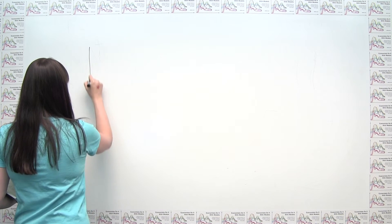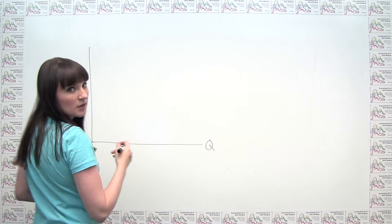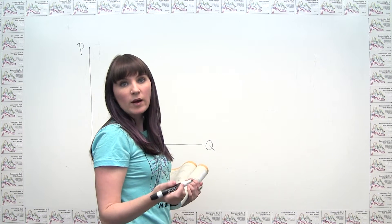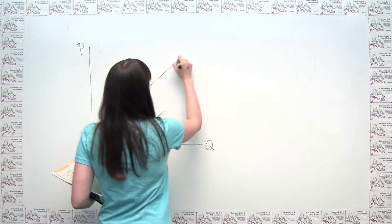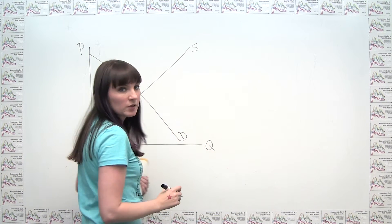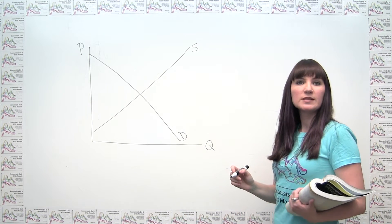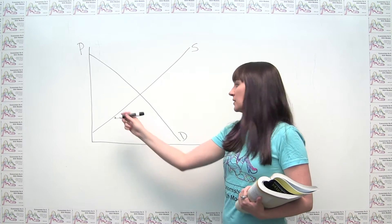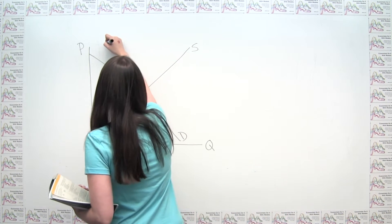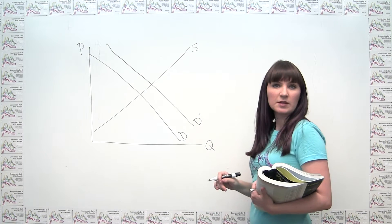We can start with our supply and demand diagram. We have market quantity on the horizontal axis and price on the vertical axis. Since the problem didn't tell us otherwise, we can just start with our typical shaped supply and demand curves — a supply curve that's upward sloping and a demand curve that's downward sloping. Coming back to the problem, it says the demand for blueberries increases, so we know that a demand increase is a shift to the right on the quantity axis. Our new demand curve — call that D' — is going to look something like this.